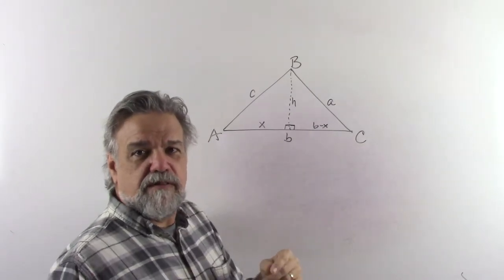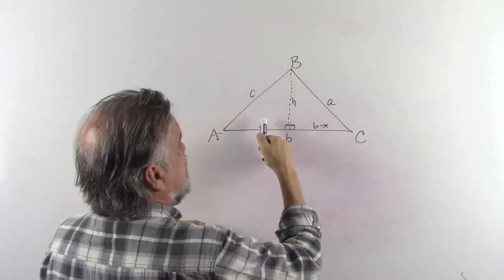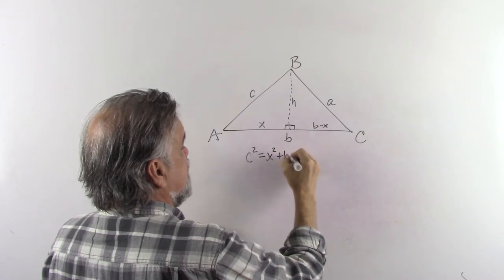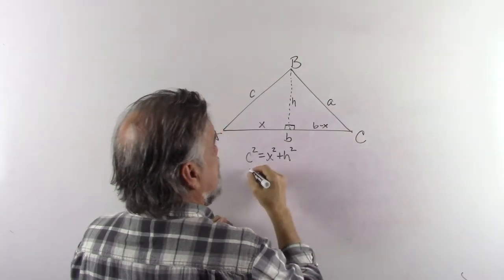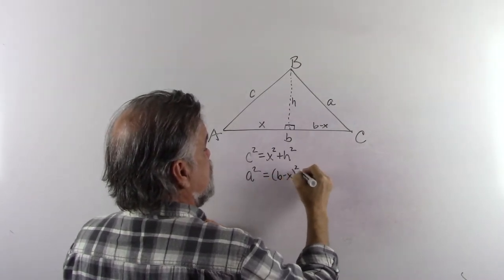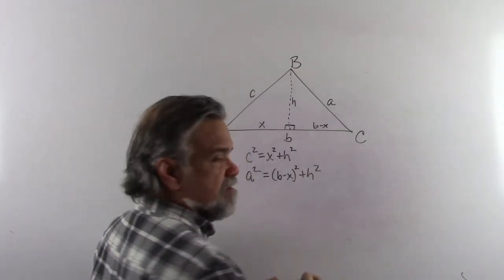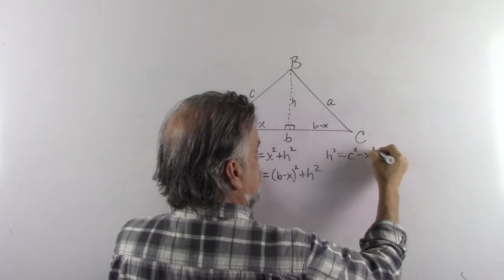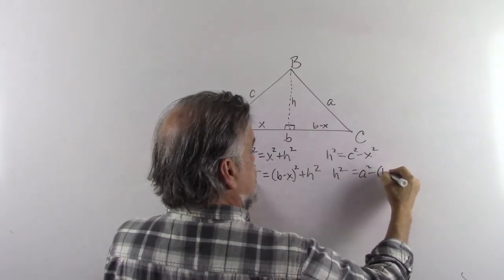Since this is an altitude, this is a right angle and this is also a right angle. So now I want to think about the Pythagorean theorem. It tells us that X squared plus H squared equals C squared, so C squared equals X squared plus H squared. And it also tells us, for the right triangle over here, that A squared equals B minus X squared plus H squared. Let's solve both of these for H squared: H squared equals C squared minus X squared, and H squared equals A squared minus (B minus X) squared.